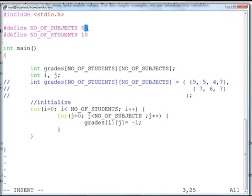My program is already compilable and can already handle NO_OF_SUBJECTS as six. Now if I would have used it like grades[10][5], then I will have to go all the way in the program.